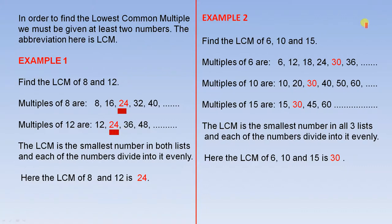Example 2. Find the LCM of 6, 10 and 15. Here are the multiples of 6, here are the multiples of 10 and here are the multiples of 15. The LCM is the smallest number in all three lists and each of the numbers divide into it evenly. So here the LCM of 6, 10 and 15 is 30 because that's the smallest number that occurs in all three lists.